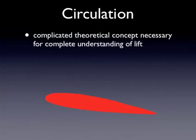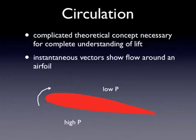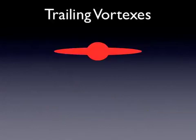Circulation is a pretty complicated topic — beyond the scope of this class — but it's necessary for understanding the mathematics of lift. The basic idea is that instantaneous vectors show flow around an airfoil. With high pressure below the wing and low pressure above the wing, vectors actually show air traveling all the way around the wing. This doesn't really happen in reality, but these instantaneous vectors do exist, and that circulation has a big impact on lift and the design of airfoils.